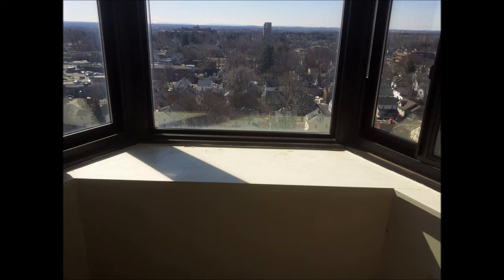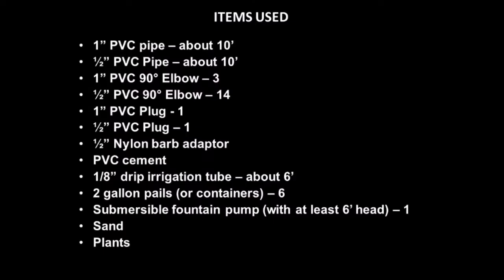The items used in this project include: one inch PVC pipe about 10 feet long, one inch PVC elbows (three and fourteen), one inch PVC plug, one inch PVC half inch nylon barb adapter, PVC cement, eight inch drip irrigation tube about six feet long, two gallon pails (about six of them), submersible fountain pump with at least six feet of head, sand and plants.